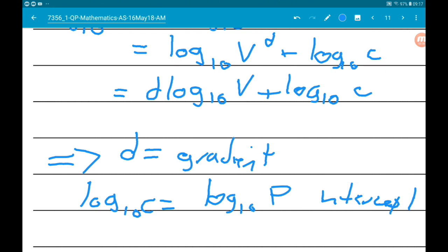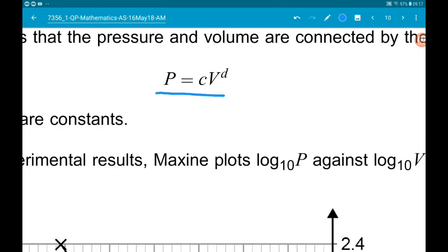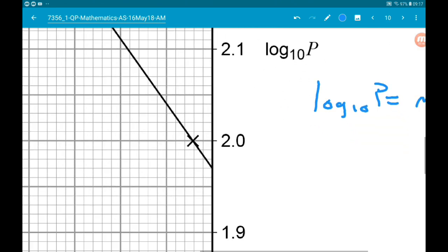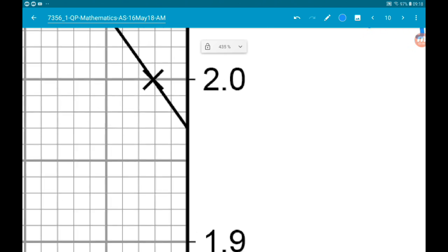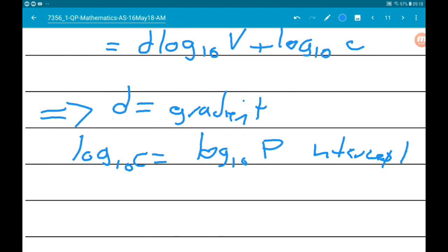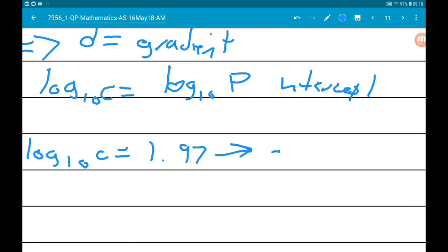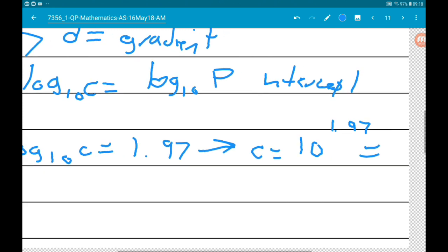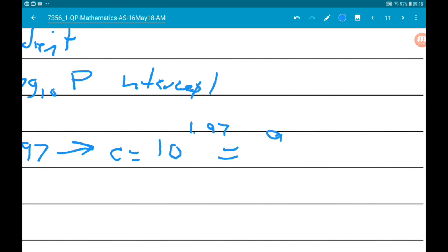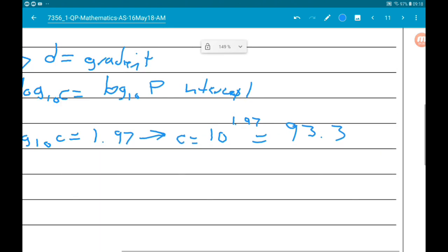Let's work out c first of all. So where do we hit the log base 10 P axis? It's here at 1.97. So we know that log base 10 of c is 1.97. So c is 10 to the 1.97. Now if we take that again to three sig figs we get 93.3.